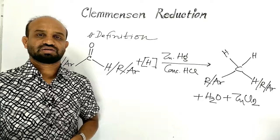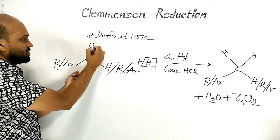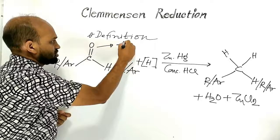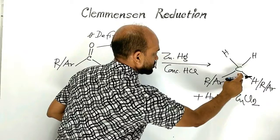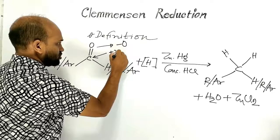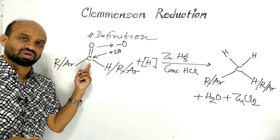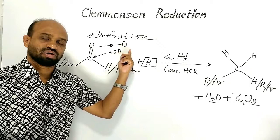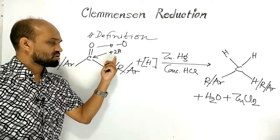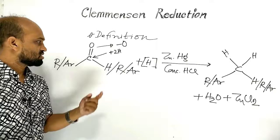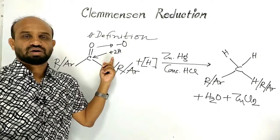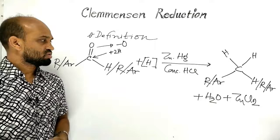This reaction is named after a Danish chemist Eric Christian Clemmensen. In this reaction, oxygen is removed from carbon, which is a reduction process, and two hydrogen atoms are joined to the carbon atom. Removal of oxygen or an electronegative element, or addition of hydrogen or an electropositive element, is a reduction reaction.